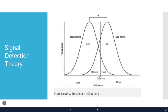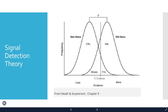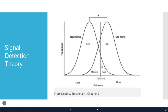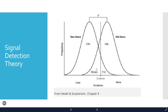You can also measure the criterion using a measure called c. The criterion can shift — some people are more liberal, meaning more old responses, so their criterion shifts left. They'd have more hits but also more false alarms. Criterion can be influenced by age, Alzheimer's disease, traumatic brain injury, and also by instructions — for example, telling participants to call something old if it has the slightest chance of being old.